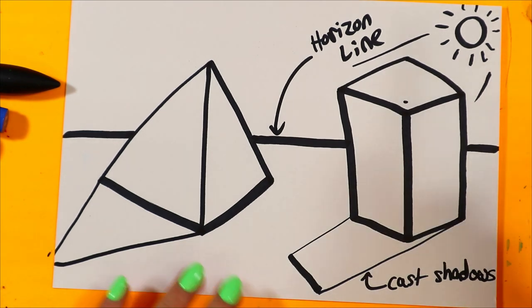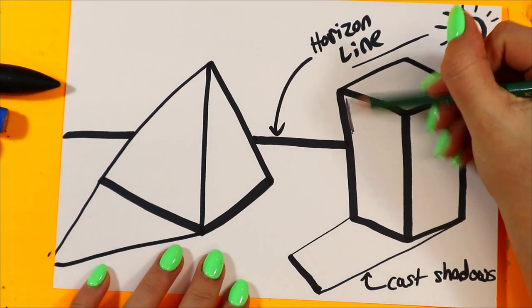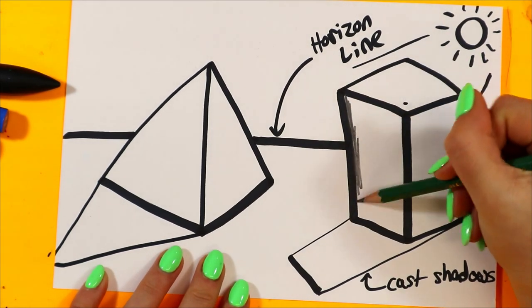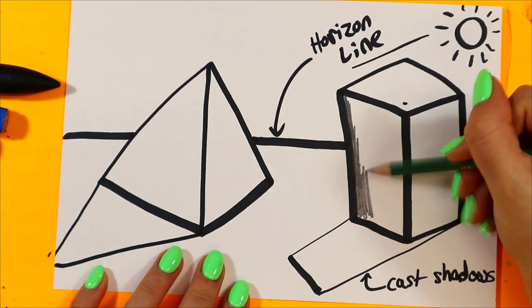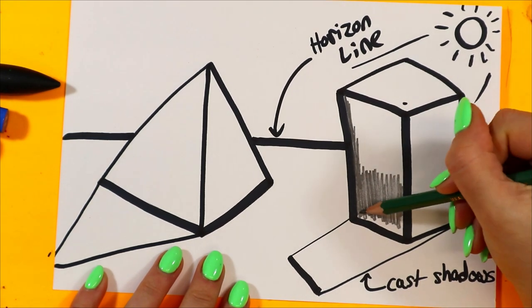So let's grab our pencil and let's get shading. So we're going to do our darkest value on this side where the sun is not hitting and creating a light source.